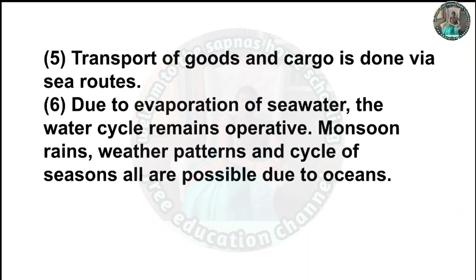Due to evaporation of seawater, the water cycle remains operative. Monsoon rains, weather patterns and cycle of seasons are all possible due to oceans.